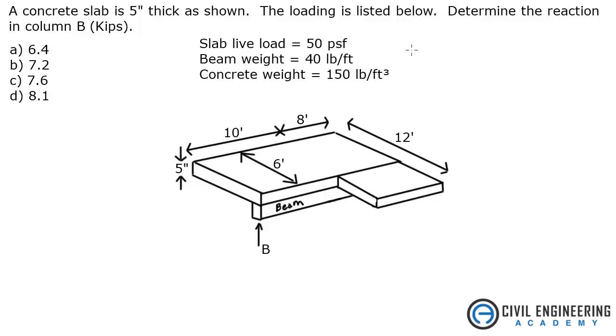So the first thing we need to look at is our loads. We need to look at our dead loads. We've got 150 pounds per cubic foot, that's the concrete unit weight. And if we multiply that by the thickness of this slab, which is 5 inches, we're going to divide that by 12 inches in a foot. So our inches cancel. Our feet will cancel with one of these. That gives me 62.5 pounds per foot squared. So that's our dead load.